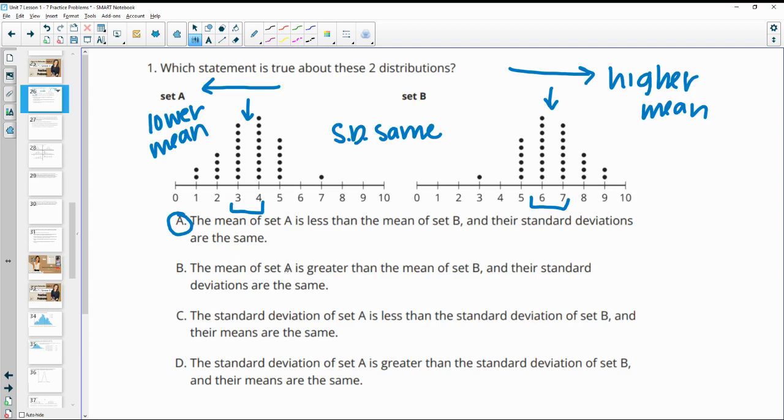And you can read through the others to see that they're incorrect. So B says the mean in set A is greater. So that's wrong. C says the standard deviation in A is less, but they're similarly spaced. So that's not true. And then D talks about the standard deviation being greater. So A.